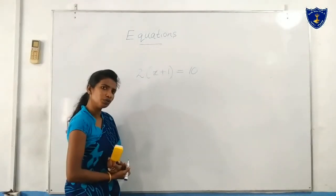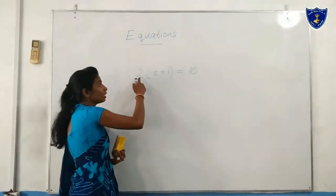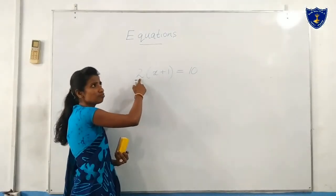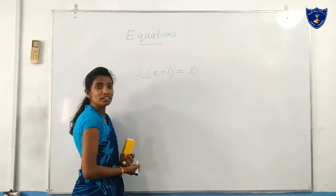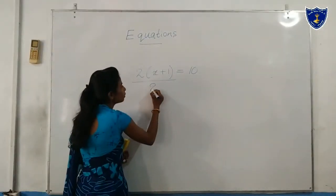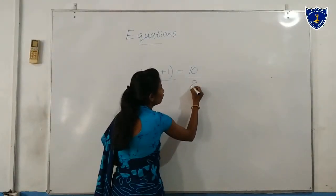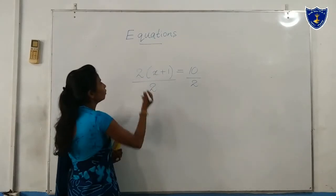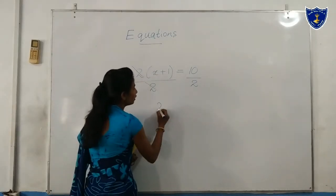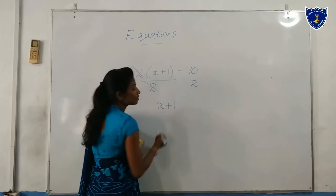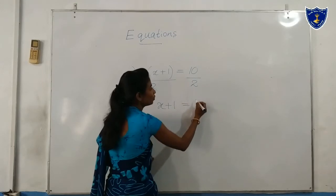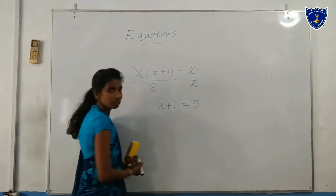What do we want to do? We want to take the inverse of multiplication, which is division. So we divide both sides by 2. 10 divided by 2 gives 5, and the 2 cancels out, leaving x plus 1 equals 5.